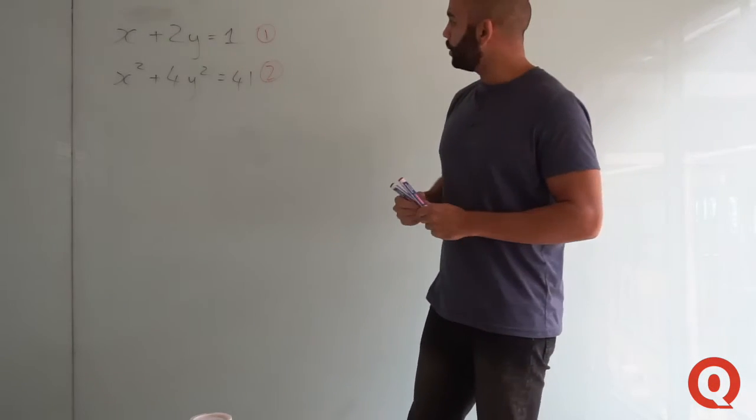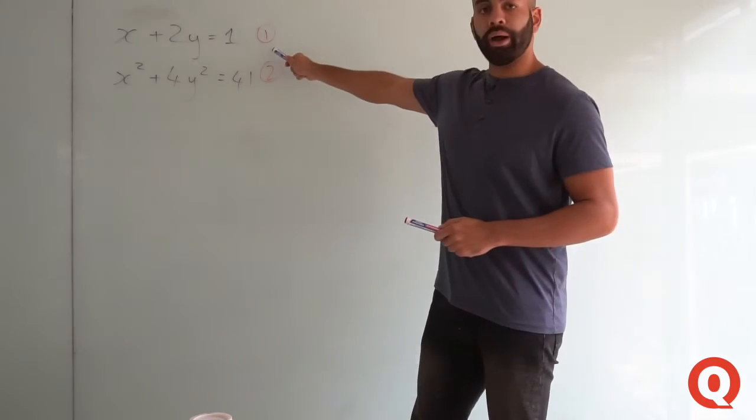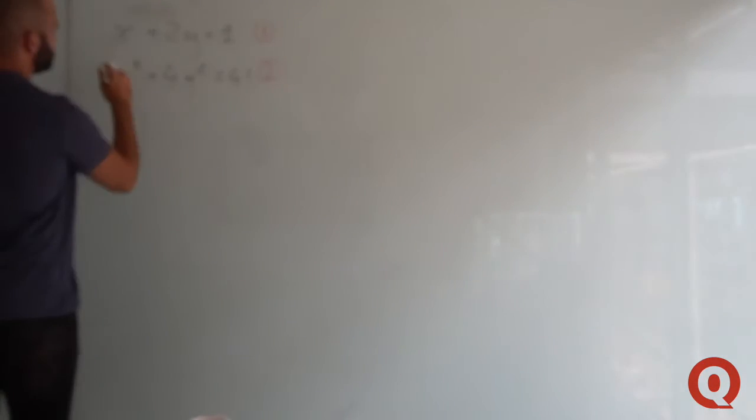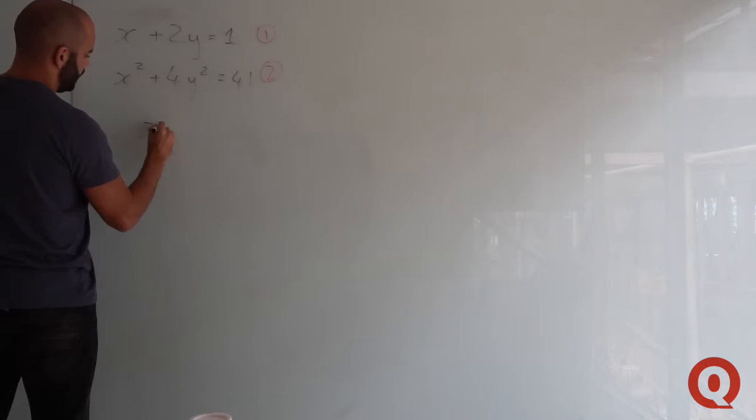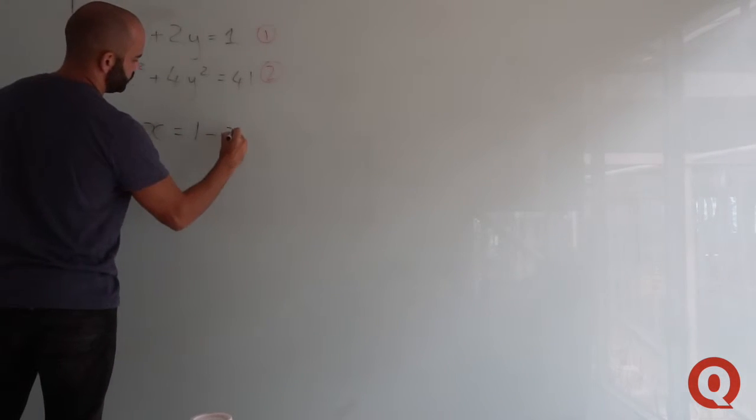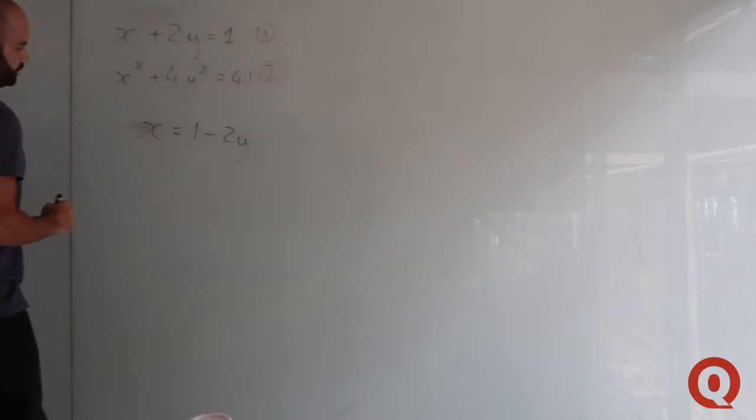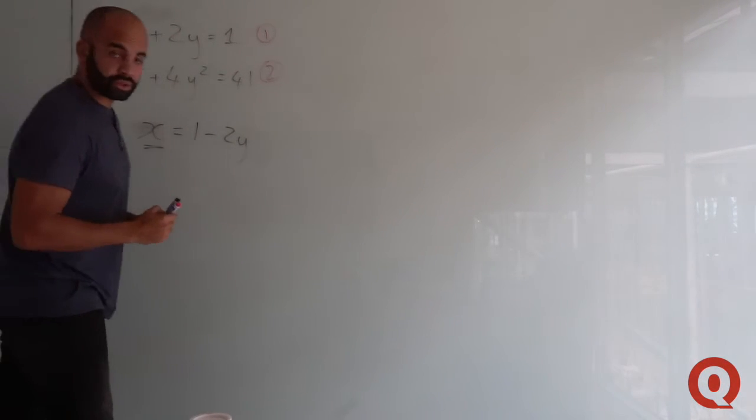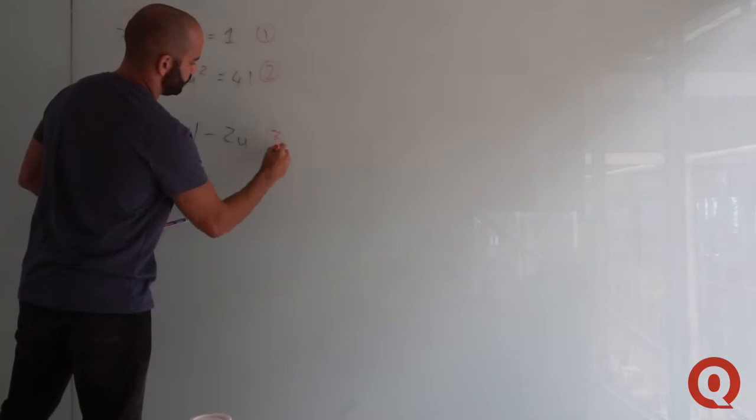I want to start manipulating equation one so I can substitute it into equation two. Make x the subject of equation one: x equals 1 minus 2y. We've got x as the subject of the formula, and we can denote this as equation three.